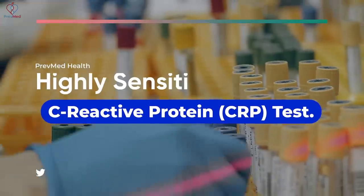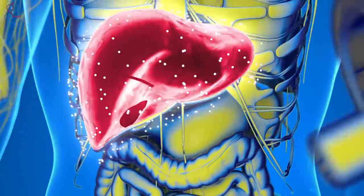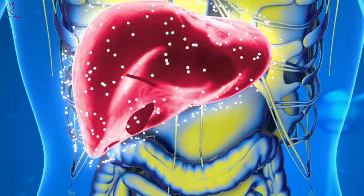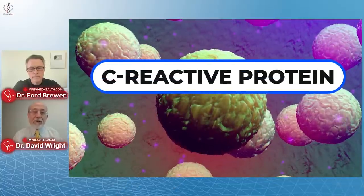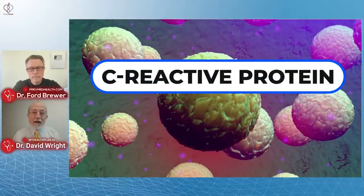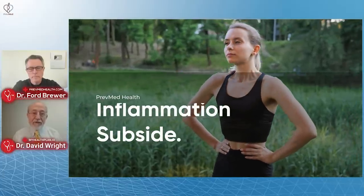One is called highly sensitive C-reactive protein. This is produced from the liver whenever you have anything that causes inflammation. So a toothache, a head cold, a sprained ankle, all of those things can raise the C-reactive protein. Those tend to raise it briefly and it comes right back down after that inflammation subsides.